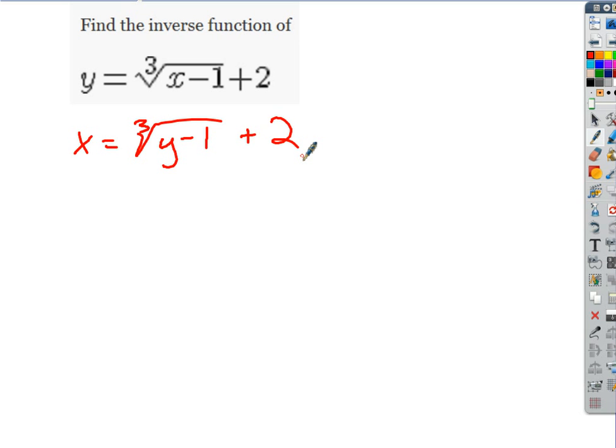Subtract 2 and cube both sides. Yeah. And then add one. We have it, right? So those are our steps. So first we would subtract 2, get that y by itself. So we get x minus 2 equals the cube root of y minus 1. Okay. You said we'd cube both sides.